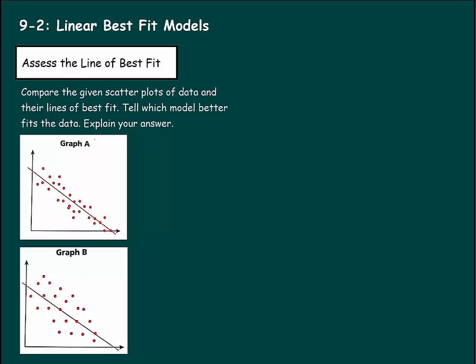Now we can assess the line of best fit. So we worked on this a little bit with scatter plots. A line of best fit is going to create the pattern and split the data evenly. So you're going to try to get as many dots on the top as you do on the bottom. Now we're going to see which line of best fit works better with the graph that it's given. Graph A splits the data like this. Graph B also splits this negative relationship.